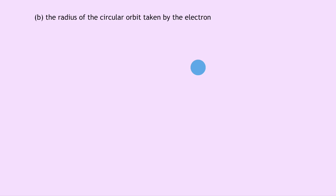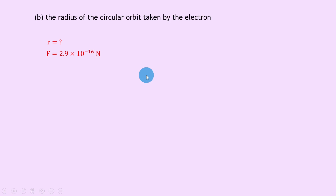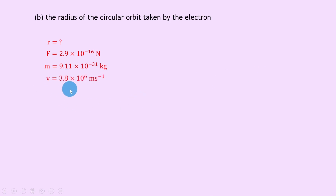Part b: calculate the radius of the circular orbit. Using centripetal force f equals mv squared over r, we're trying to find r. Force f from part a is 2.9e-16 newtons. Mass m is 9.11 times 10 to the minus 31 kilograms from the data sheet for an electron. Speed v is 3.8 times 10 to the 6 meters per second.